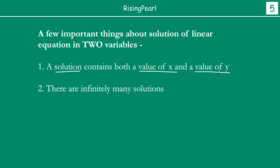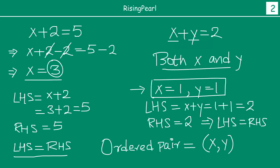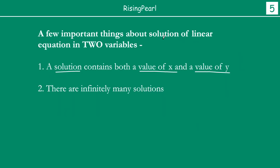The first thing is that a solution contains both a value of x and a value of y. This is a very important point because we have seen that when we talk about linear equations in one variable, there is only one solution. But when we talk about linear equations in two variables, there is a value for x and a value for y. So when we use the term solution, we actually use a value for x and a value of y for an equation in two variables.